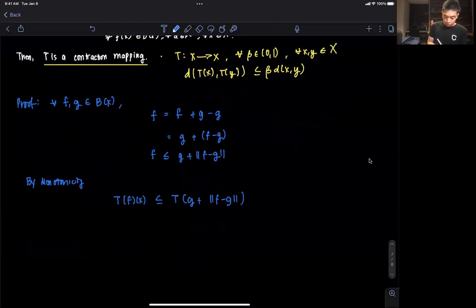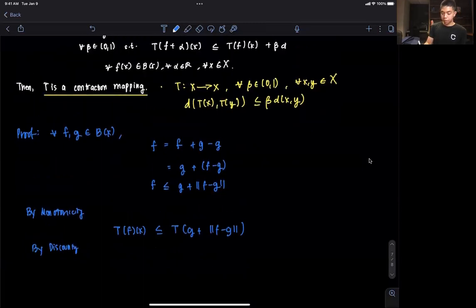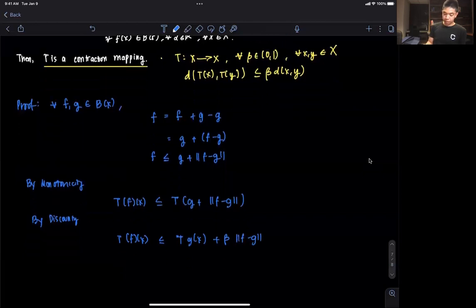And we can further modify this by discounting, that discounting property. So we have this form on top. We have that T(f)(x) is less than or equal to T(g)(x) plus beta times ||f - g||, and this is by discounting.